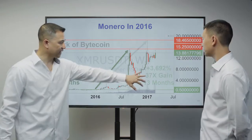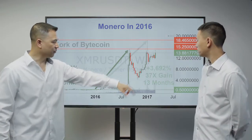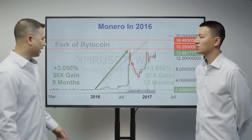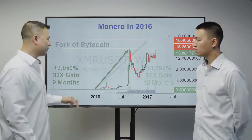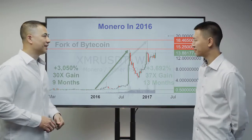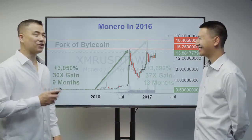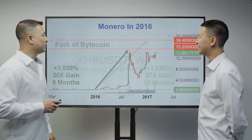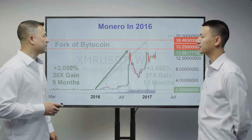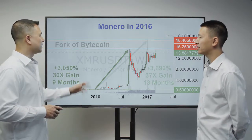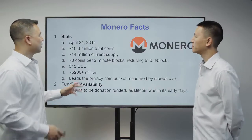In the extended period shown, it went up 37 times if you waited another four months. Definitely life-changing profits are available in the privacy coin sector.